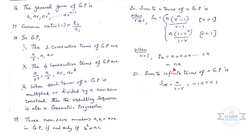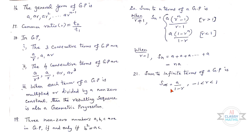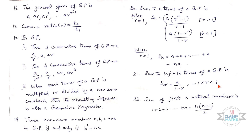Next one: Sum to infinite terms of a GP is S∞ = a/(1 − r), where r lies between −1 and 1.